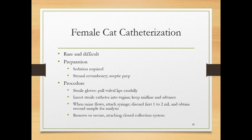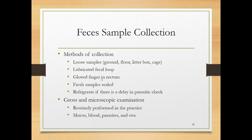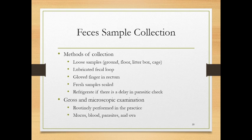Feces can be collected from the ground, floor, litter box, or cage, or obtained with a lubricated fecal loop inserted into the rectum, or with a gloved finger. Store fresh samples in a sealed plastic container; refrigerate if there will be more than a 24-hour delay. Examine grossly first — with the naked eye — then microscopically. Look for mucus, blood, visible parasites, and under the microscope, parasite eggs and ova. Many practices now send fecal samples to a lab with a centrifuge to better concentrate and identify parasites.